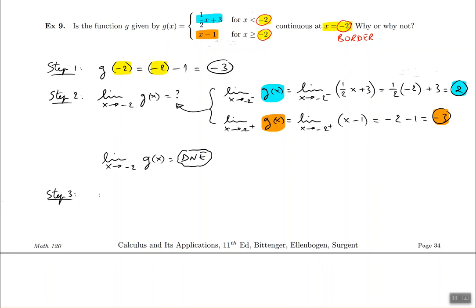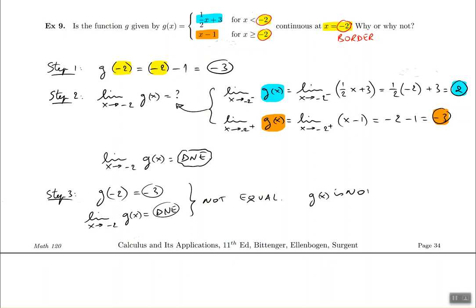Step number 3 is where we decide if the function is continuous or not. g of negative 2 was equal to negative 3, but the limit as x approaches negative 2 on g of x did not even exist. One of them does not exist and one of them is negative 3 — they are not equal because one is not even a number. Therefore, g of x is not continuous at x equal to negative 2.